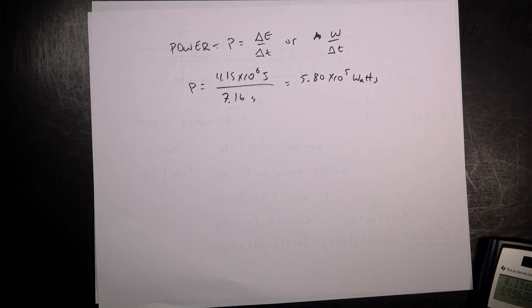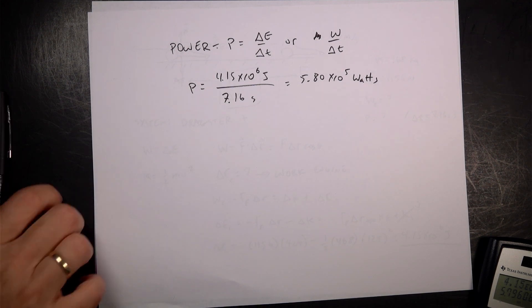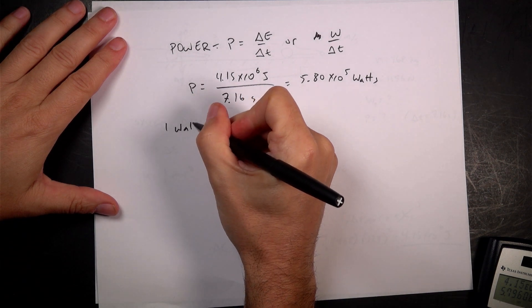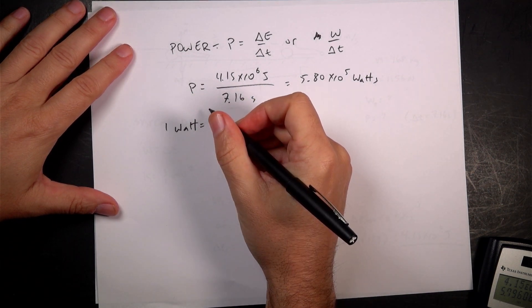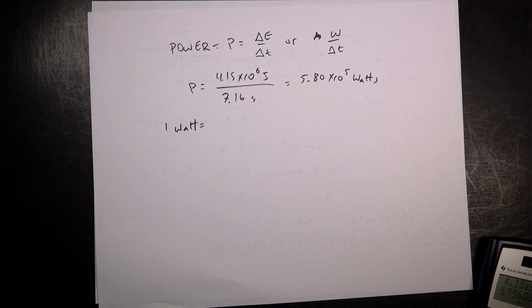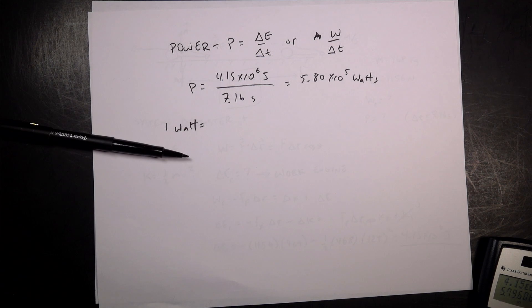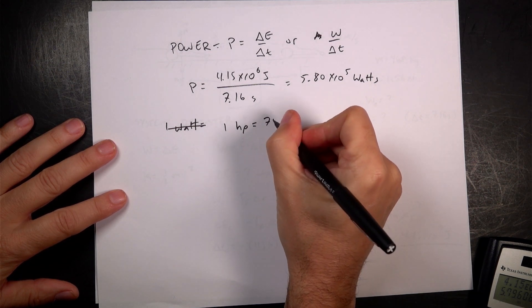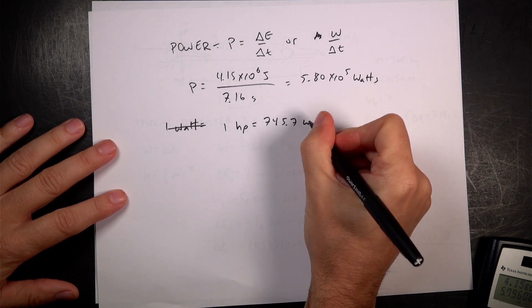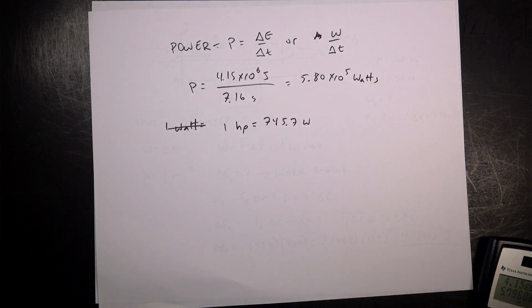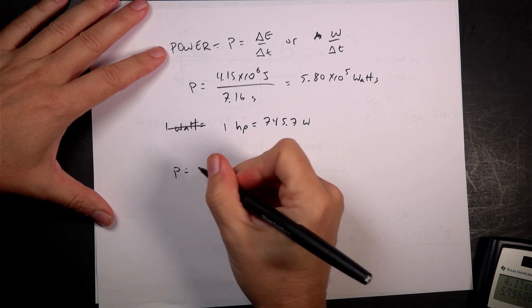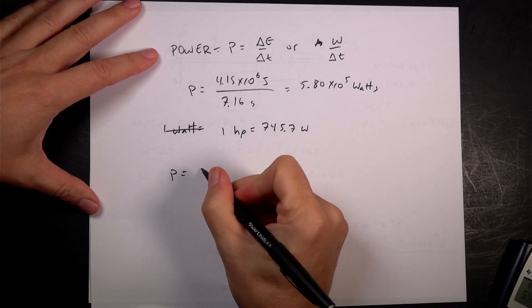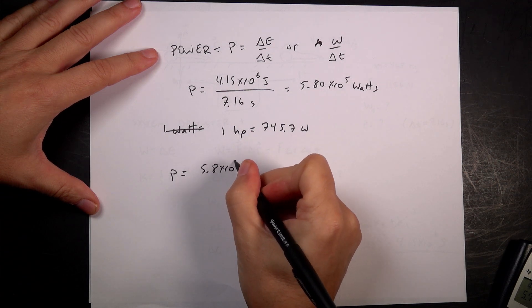Now I think it would be fun to convert this into horsepower. I can't remember the exact value... let me look up one horsepower in watts. One HP equals 745.7 watts. So if I use that value, I can calculate this. So power, and this is just a reminder of how to do unit conversions, is 5.8 times 10 to the 5th watts.